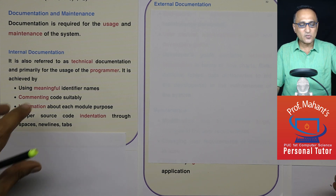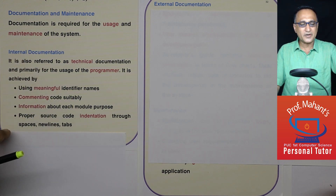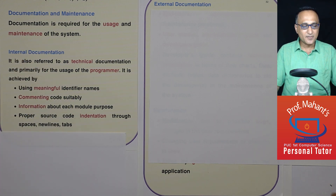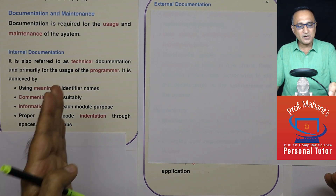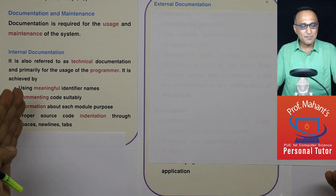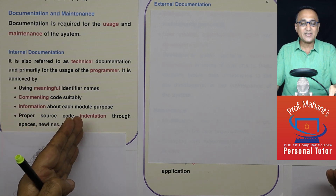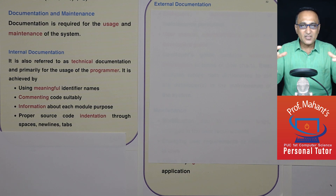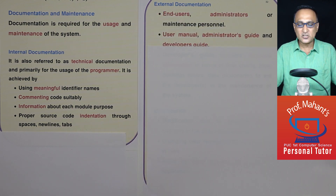To explain indentation: if I type everything together without bullet points, it is not going to be clear. By writing with one-and-a-half spacing, using colors, and properly giving space, I make things very clear. That is known as indentation. If I write everything like an essay, it is not going to be clear to you. So that is what you mean by internal documentation.